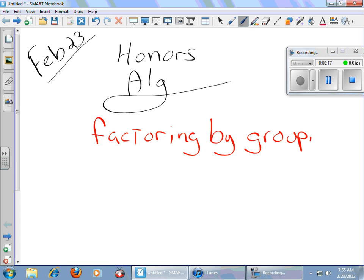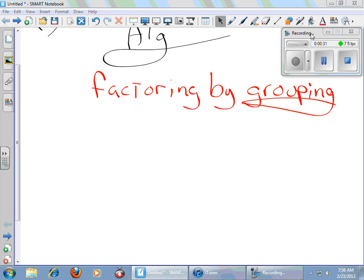Now factoring by grouping is really easy. Kids often have trouble with it, but it's easy. You just got to think about it as GCF three times. Yeah, that's all you're going to do. You're going to GCF three different times. So let's look at an example.